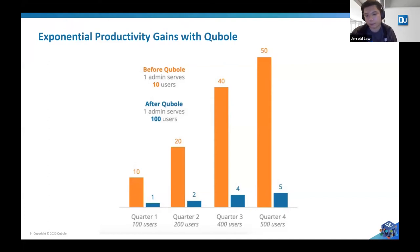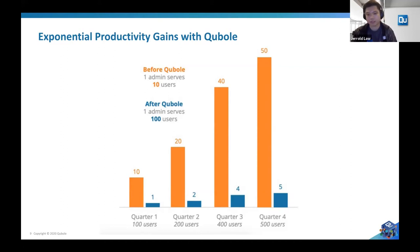You also get much higher productivity. For example, a super app in Southeast Asia that does ride hailing and food delivery had Cubo manage over 50 clusters for over a thousand users with just one data administrator. On average, we see one admin serving 10 users before Cubo on an on-prem setup, but when customers migrate to Cubo, an average admin gets to serve about 100 users. That gives you exponential productivity when it comes to hiring developers compared to admins, and helps you save a lot of cost.